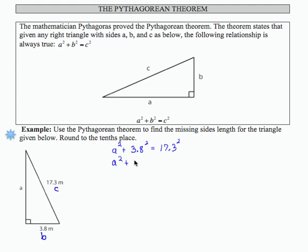3.8 squared is 14.44. 17.3 squared is 299.29.